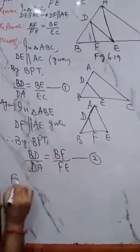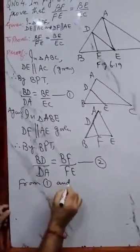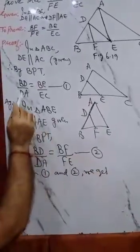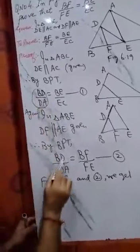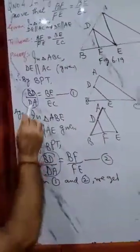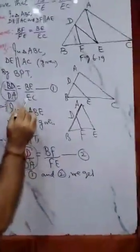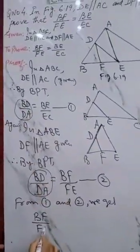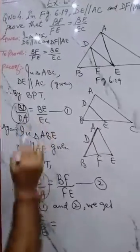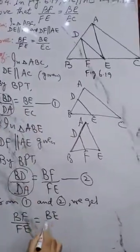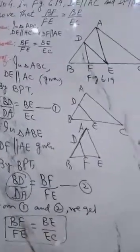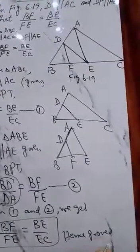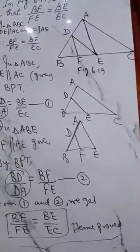From equation 1 and 2, we have, see from first, BD upon DA is here, and BD upon DA is here also. So from first and second, we can write BF upon FE is equal to BE upon EC. Hence proved. So this was question number 4. Thank you.